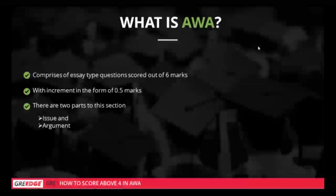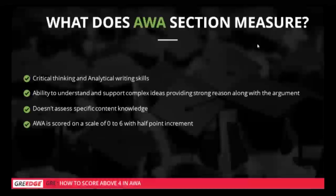What exactly does AWA measure? It measures critical thinking and writing skills — your ability to understand and support complex ideas by providing strong reasoning. How well you're able to defend your own claim is what matters. Importantly, AWA does not assess specific content knowledge. If you see a very technical essay topic, don't worry — it only checks your ability to write and reason.